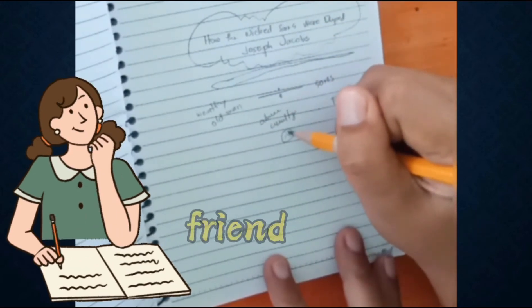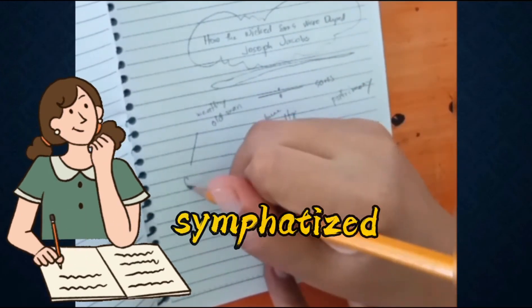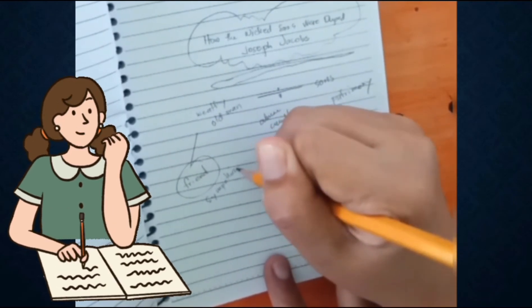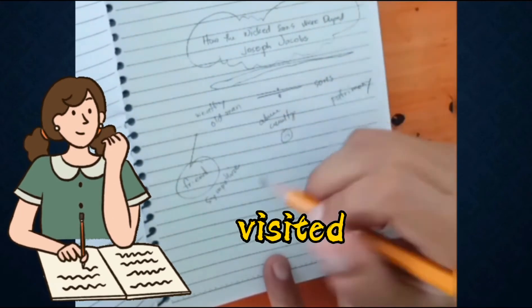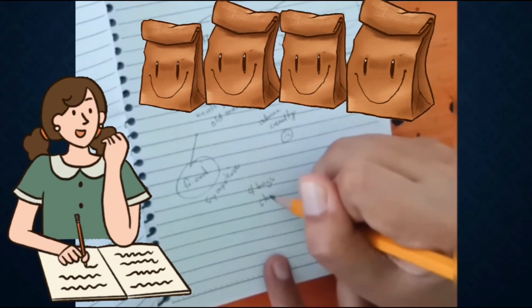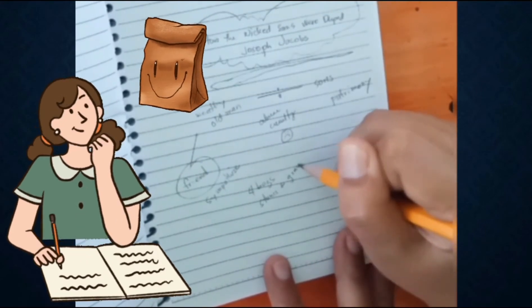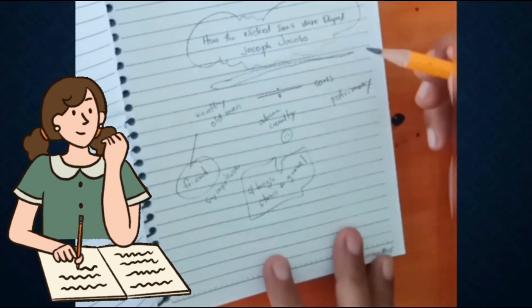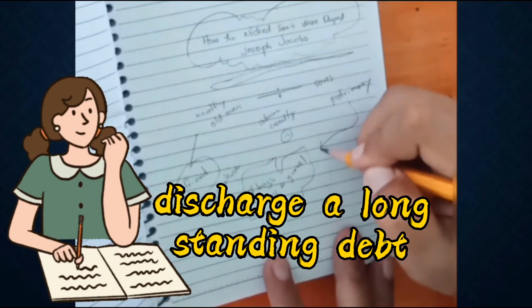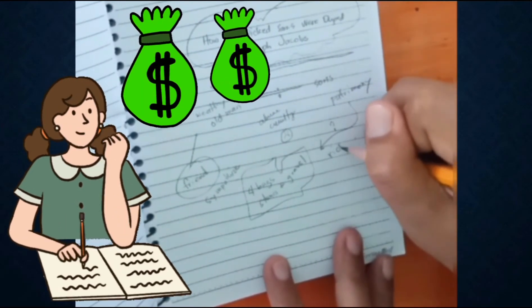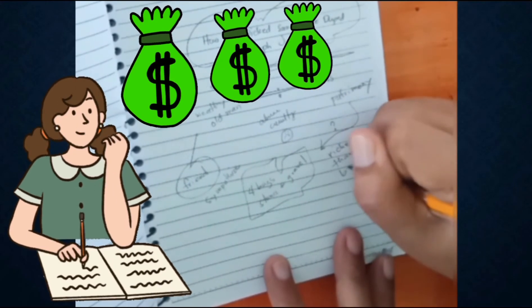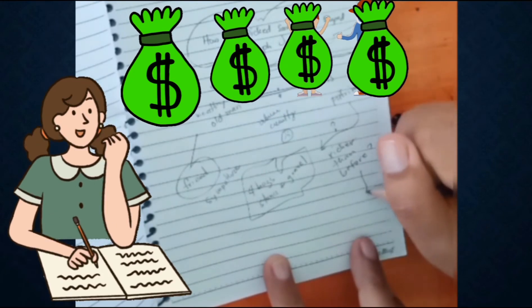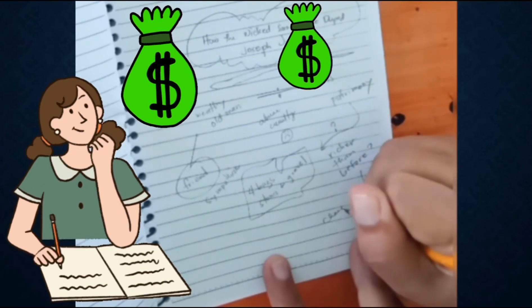One day he met a friend and related to him all his troubles. The friend sympathized very much with him and promised to think over the matter and call in a little while and tell him what to do. In a few days he visited the old man and put down four bags full of stones and gravel before him. 'Look here friend,' said he, 'your sons will get to know of my coming here today and will inquire about it. You must pretend that I came to discharge a long-standing debt with you and that you are several thousands of rupees richer than you thought you were. Keep these bags in your own hands and on no account let your sons get to them as long as you are alive. You will soon find them change their conduct toward you. I will come again soon to see how you're getting on.'